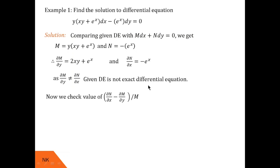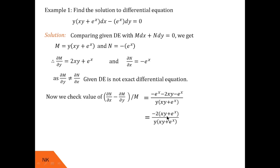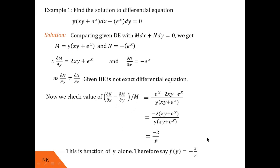Now we find the value of the expression (∂N/∂x − ∂M/∂y) / M. Substituting the derivative values in the numerator, it equals (−eˣ − 2xy − eˣ) / [y(xy + eˣ)]. From the numerator we take −2 common to get −2(xy + eˣ). The (xy + eˣ) cancels with the denominator and we are left with −2/y. So this expression is a function of y alone, and f(y) = −2/y.